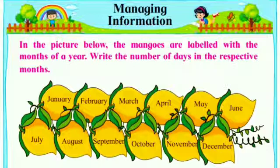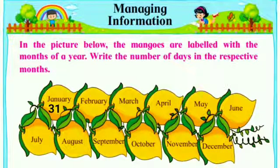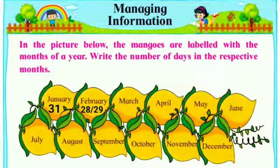Do all months have equal days? No, all the months have different days. Let us start writing the number of days of every month. Let's start with the first month: January. January has 31 days. February is a month which is alone, which has 28 days, and every fourth year it has 29 days. March has 31 days.